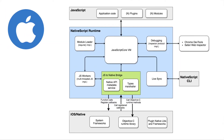Pretty much the same thing happens for iOS. You have your code at the top and below you have the JavaScript Core VM. The heart of the NativeScript bridge for iOS is JavaScriptCore, which is another implementation of JavaScript outside the browser. For iOS you can use Chrome DevTools as well as Safari Web Inspector. The communication is facilitated because for iOS the native implementation is in the same bytecode sequence as the bridge itself.